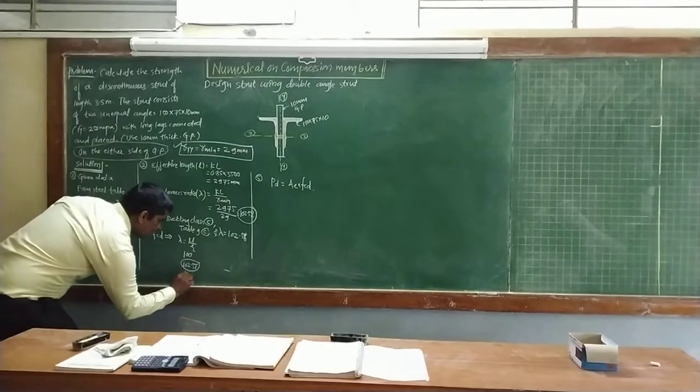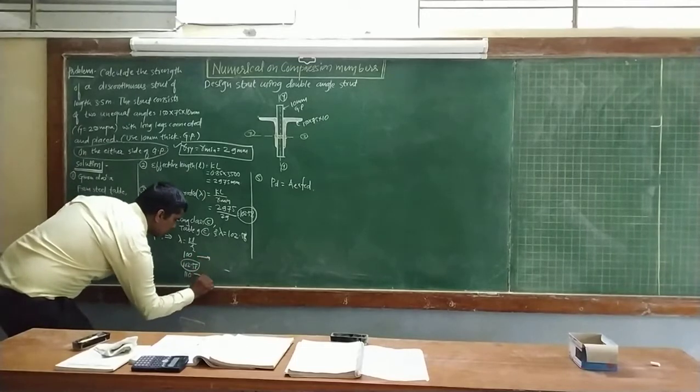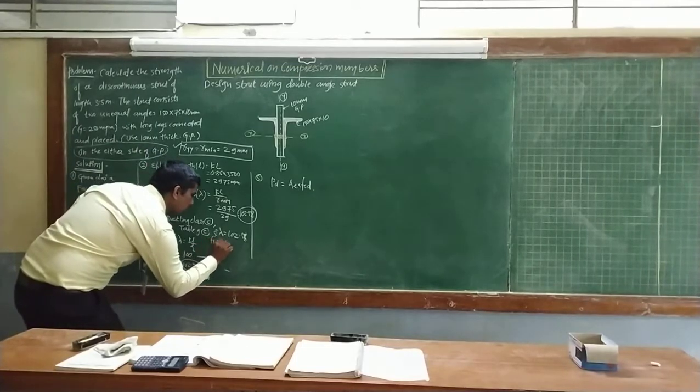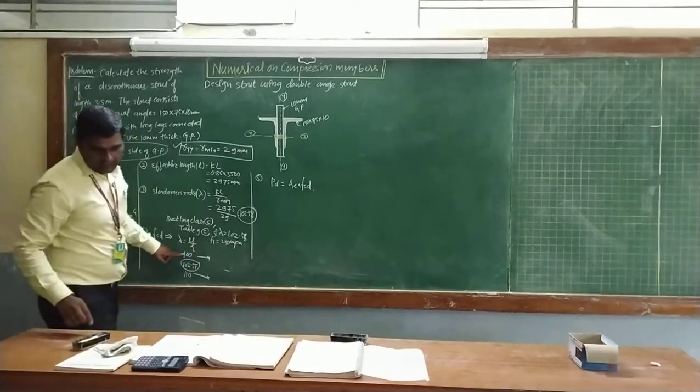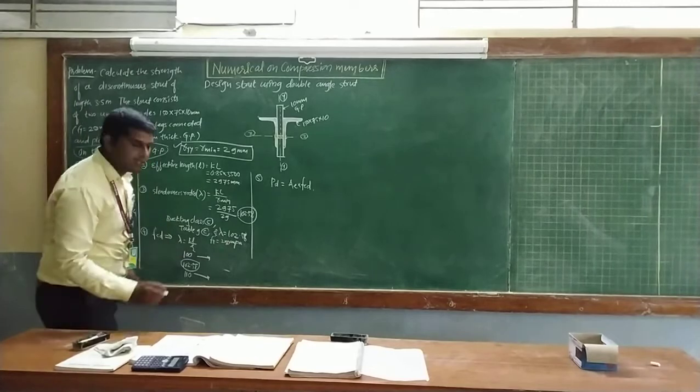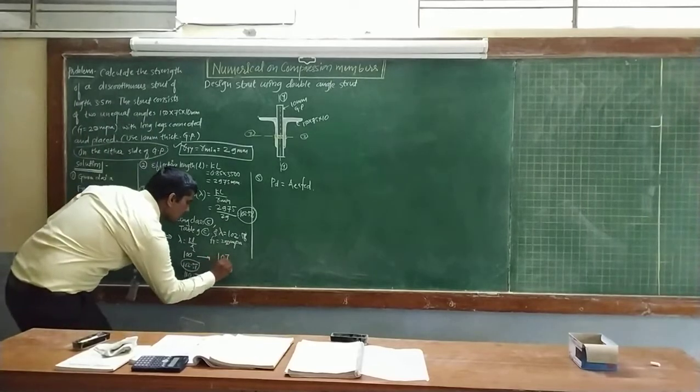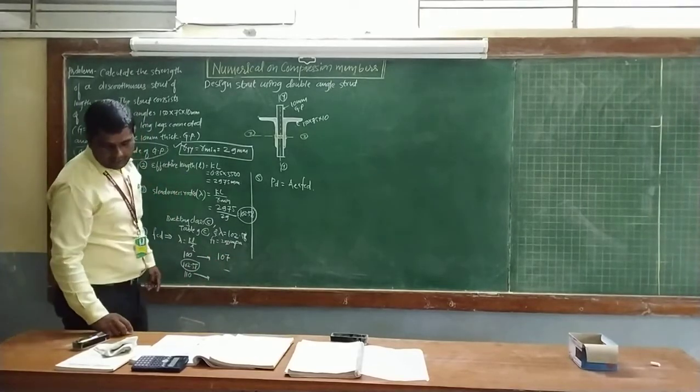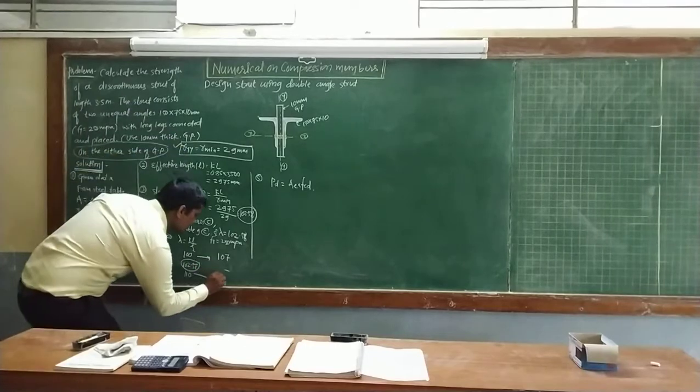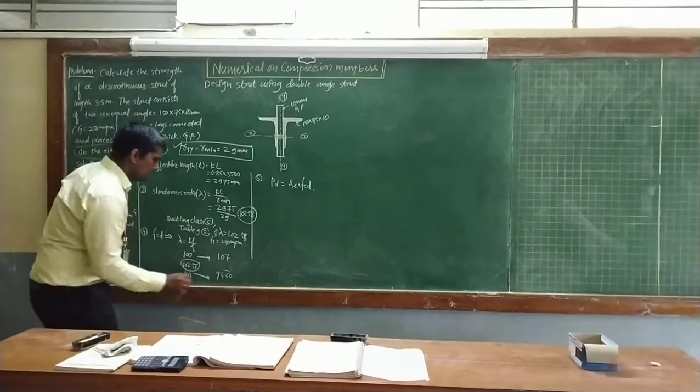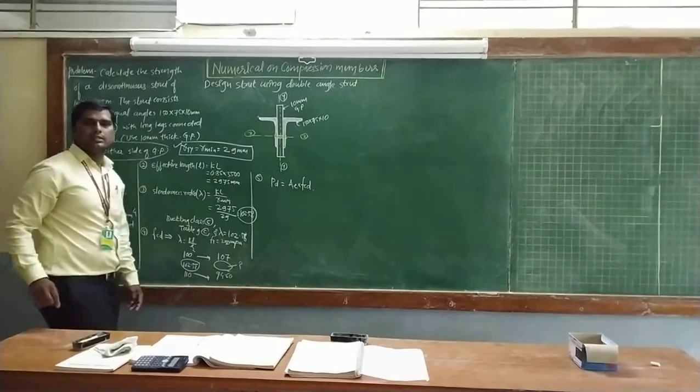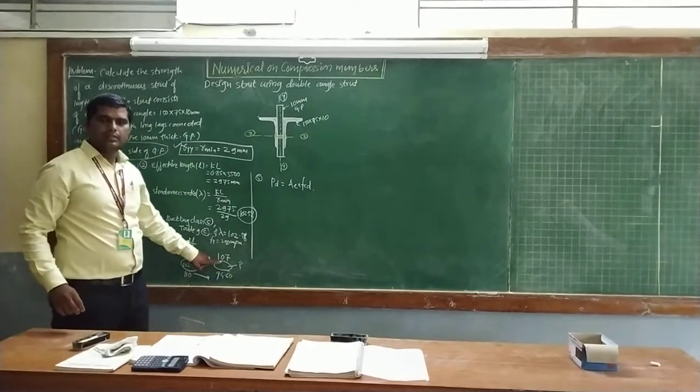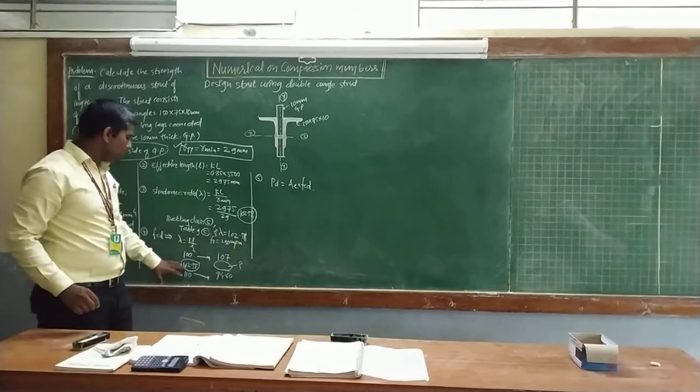Here, for FY equal to 250, we are going to know the values. For lambda equal to 100, the corresponding value is 107. And for 110, the corresponding value is 94.60. This value of FCD, we are going to find out by using interpolation.